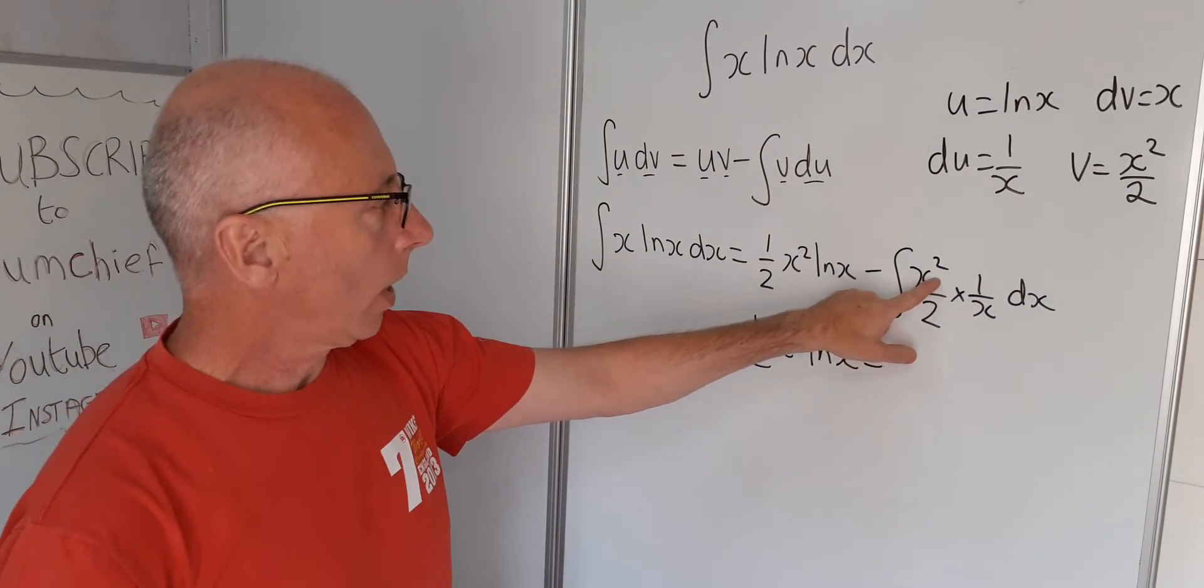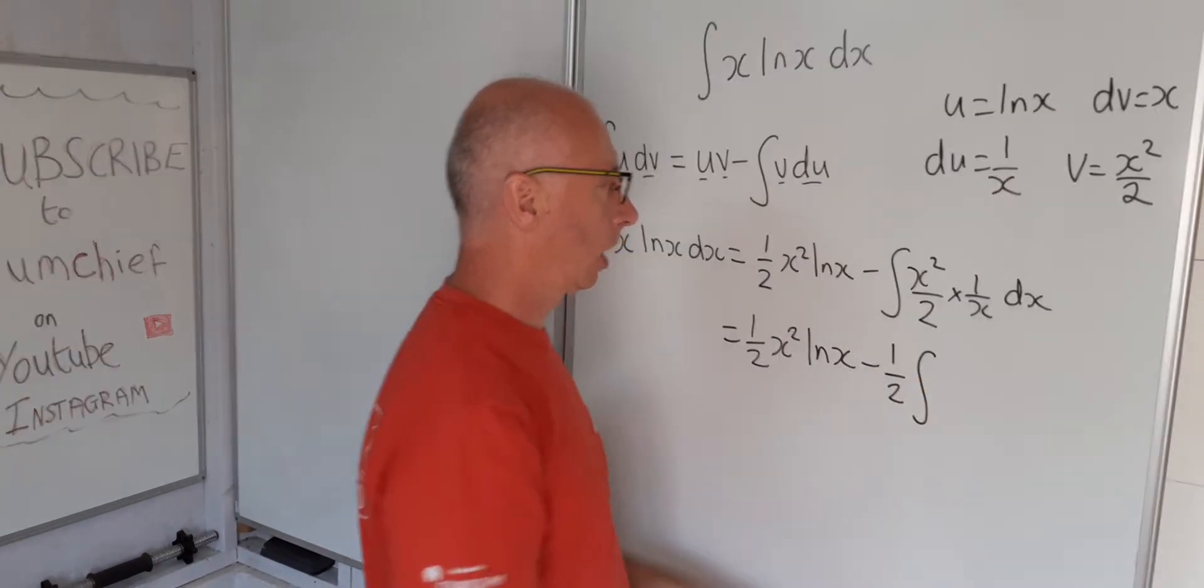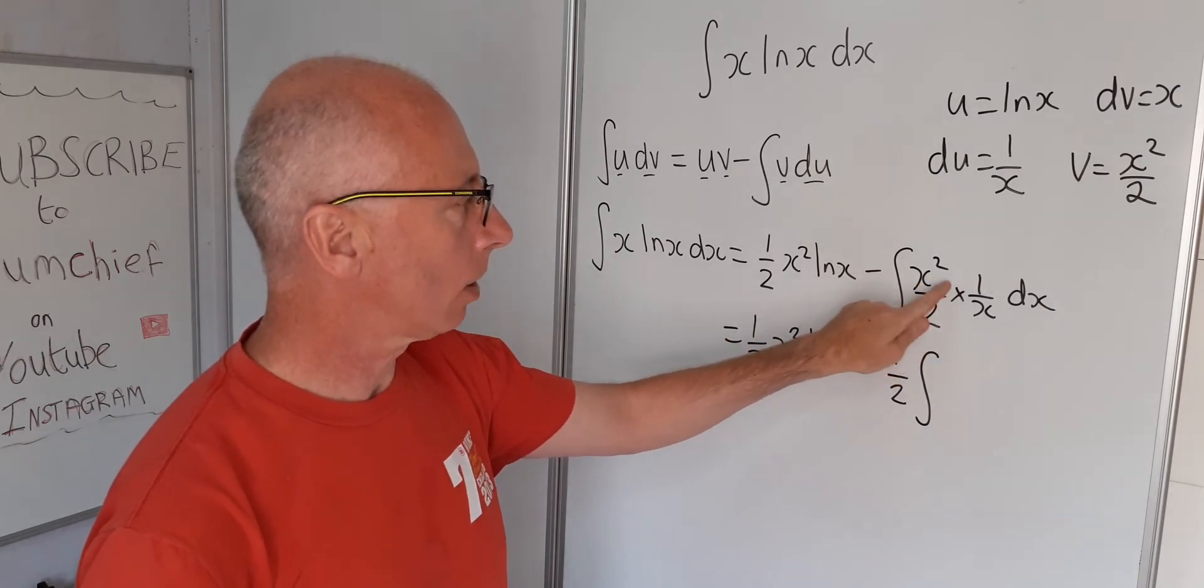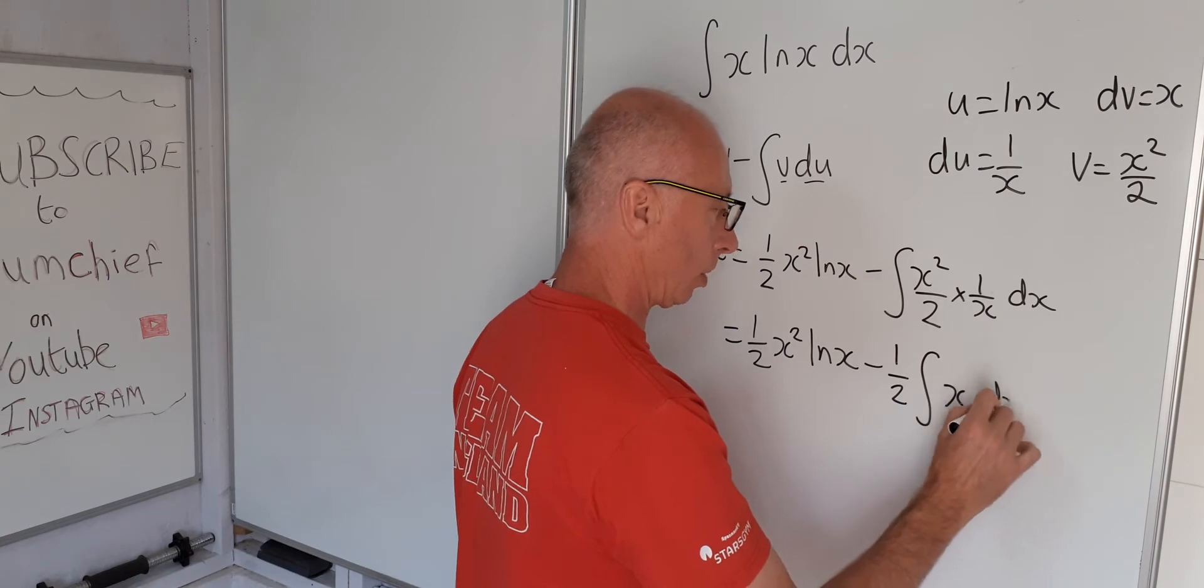So x squared over 2 we can bring the half out, which will take that out to here, then the x squared times 1 over x will just leave us with one of the x's, and then with respect to x.